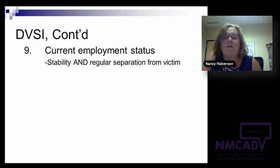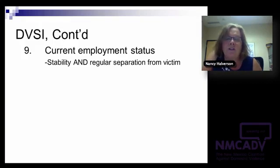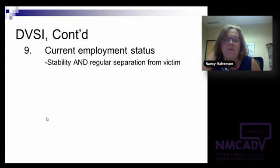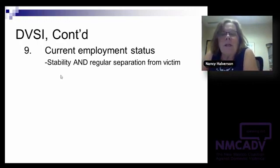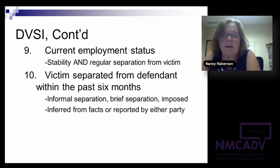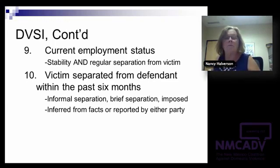Item ten covers separation violence. We're looking for a situation where a victim has separated from the defendant within the past six months. This can be informal, brief, or imposed. For example, people coming out of prison have been separated from their partners, and the very fact of separation — even if not chosen — can ramp up the risk. We can sometimes infer it from history: periods of incarceration, working elsewhere, or no contact orders being in place.